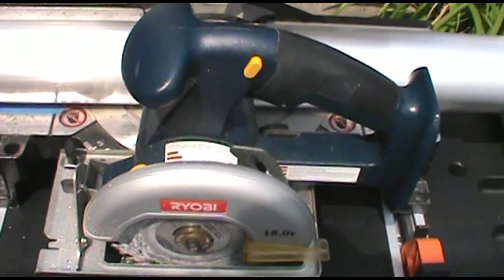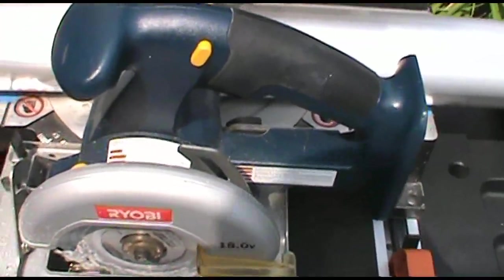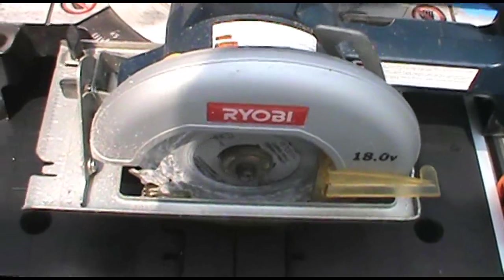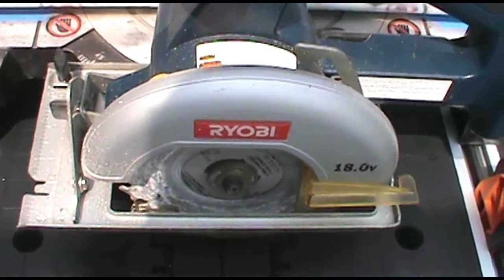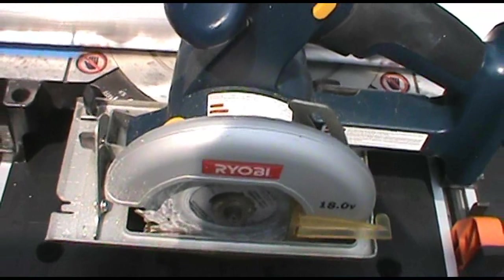For cutting the PVC posts, I'm using a circular saw. It's just battery-powered. You want to make sure you have a carbide-tipped blade on your circular saw. And just go nice and slow.